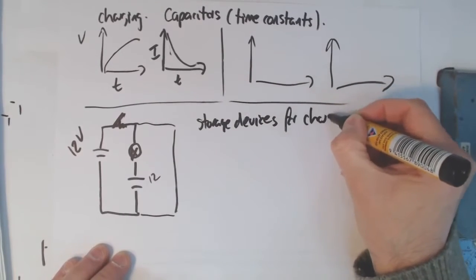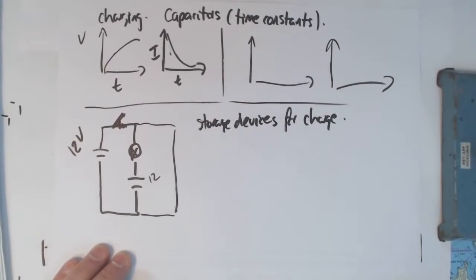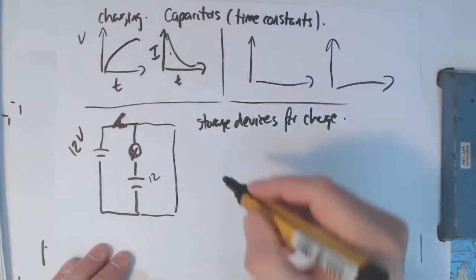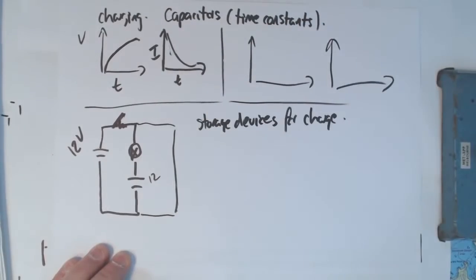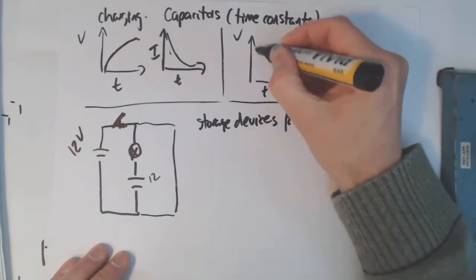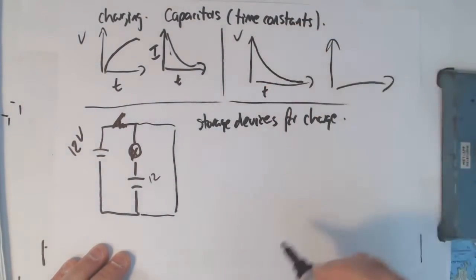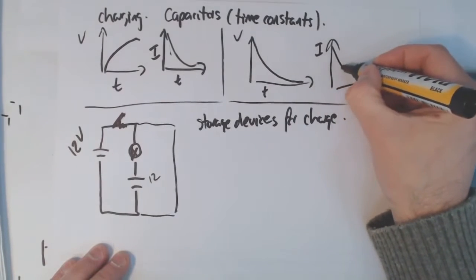So the way to think about capacitors is as storage devices for charge. That's what they are. And we charge them. Up they go. The voltage does that. The current does that. Then we discharge them. The voltage drops. And the current drops.